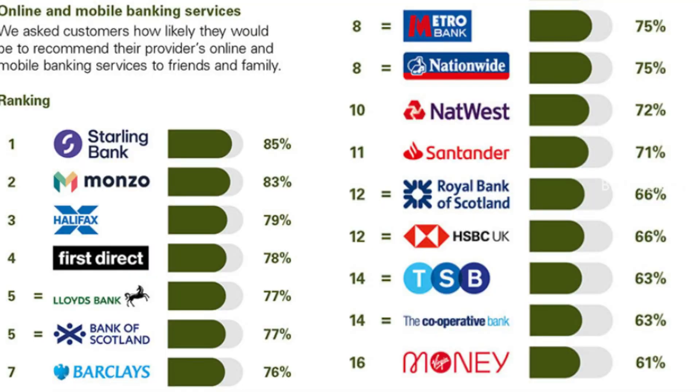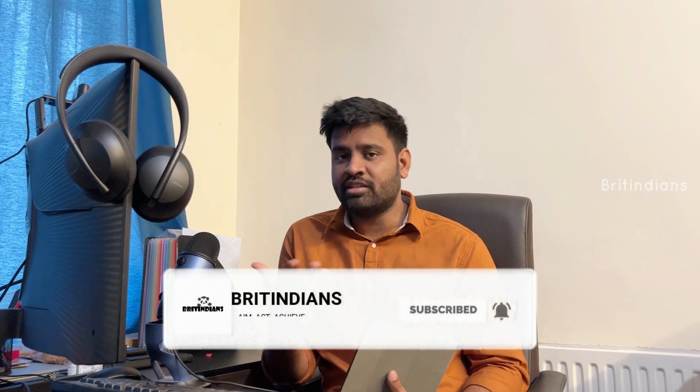There isn't much difference between physical banks like Nationwide, Halifax, Barclays, and Lloyds — you can use any of them. For a rewards account, only a few banks offer it so research which one suits you. Personally I use Barclays and NatWest and both are good. My friends use Halifax and Lloyds and every bank is reliable. My recommendation is to have one physical bank and one mobile bank — Monzo or Starling are the best mobile options.